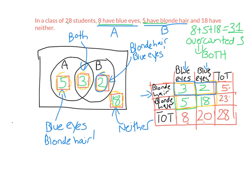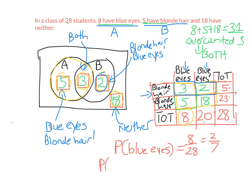Now we're going to use this information to answer some probability questions. First: if I pick a student at random, what is the probability they have blue eyes? From the Venn diagram and the two-way table, we can see there are 8 people with blue eyes out of 28 total. We can simplify that fraction to 2 over 7. What's the probability a student has blonde hair AND blue eyes? We look at the middle of the Venn diagram or that cell of the two-way table — that's 3 students out of 28 total.